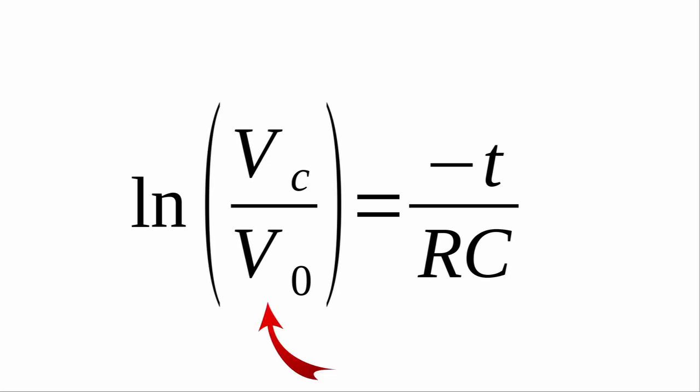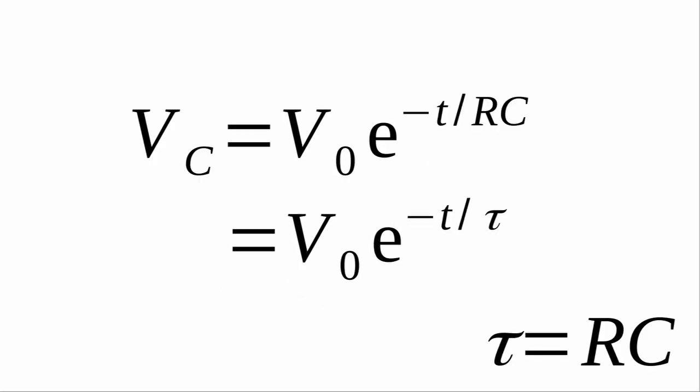Here, V0 is the initial voltage across the capacitor before the circuit was closed, and Vc is the voltage as a function of time as the capacitor discharges. Once again, the quantity we are interested in, Vc, is in the logarithm, so we will exponentiate both sides and solve to get our final result.